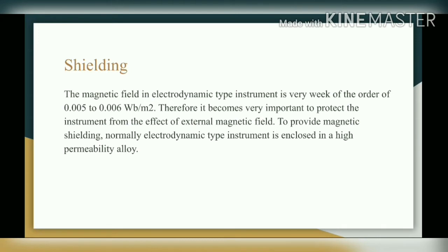Next is shielding. The magnetic field in the electrodynamic type instrument is very weak, of the order of 0.005 to 0.006 Weber per meter square. Therefore, it becomes very important to protect the instrument from the effect of external magnetic field. To provide magnetic shielding, the electrodynamic type instrument is enclosed in a high permeability alloy, which avoids the effect of external stray magnetic field and reduces errors.